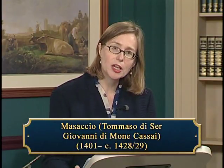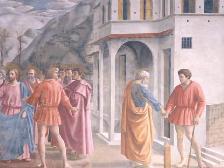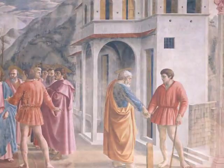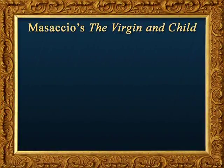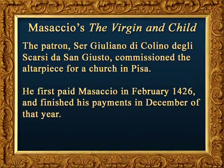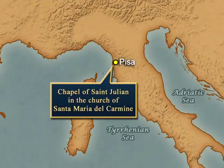It is not far-fetched to say that he was the first painter of the Italian Renaissance style. He is best known for his frescoes — that is, wall paintings — in the Brancacci Chapel of Santa Maria del Carmine in Florence, but his few panel paintings are equally significant. The Virgin and Child is also his most fully documented painting. The patron, Ser Giuliano di Colino dell'Iscarsi di San Giusto, commissioned the altarpiece for a church in the town of Pisa. He first paid Masaccio in February 1426 and finished his payments in December of that year. The chapel of Saint Julian in the church of Santa Maria del Carmine in Pisa no longer exists, but the painting was identified as having been there by the writer Vasari in 1568.